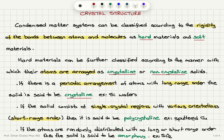For example, sputtered films of copper tend to be polycrystalline. If the atoms are randomly distributed with no long- or short-range order, then the material is called amorphous. An example is silicon oxide in glass form — glass is amorphous.